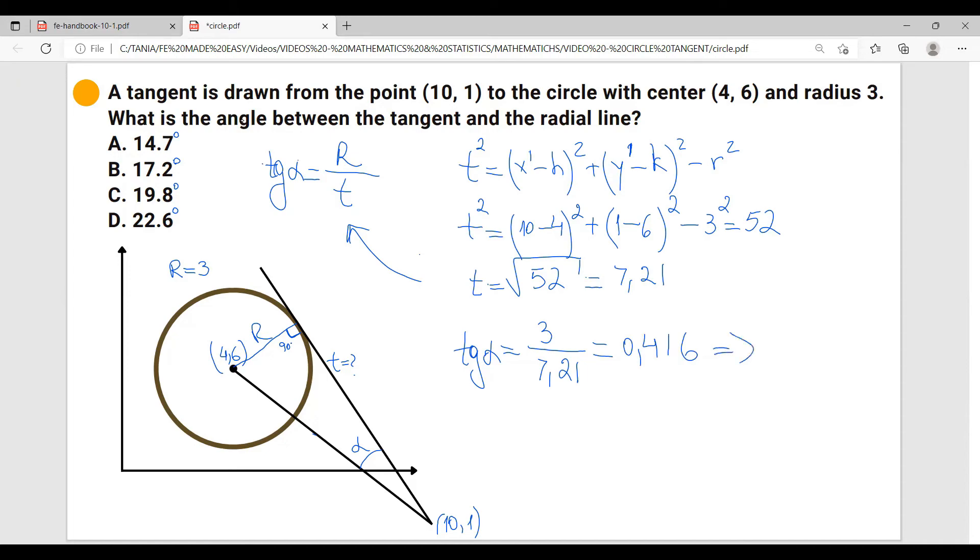And from here, it results that alpha equals to arctangent of 0.416, and it equals to 22.59 degrees, which is approximately equal to 22.6 degrees. And looking at the answers, the correct answer is D.